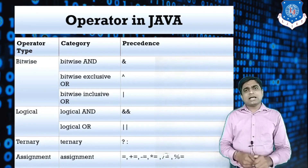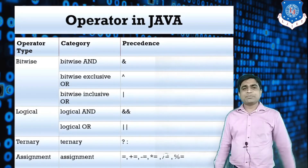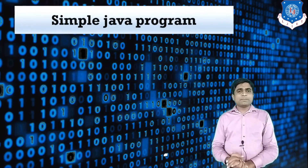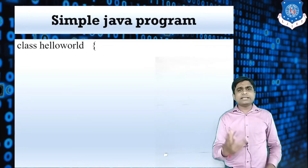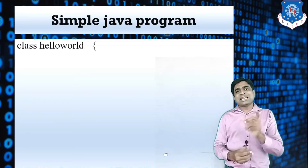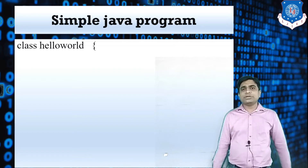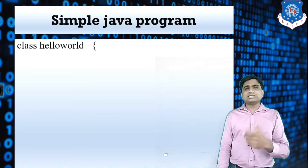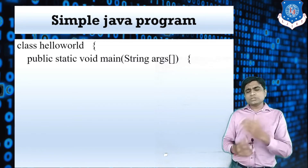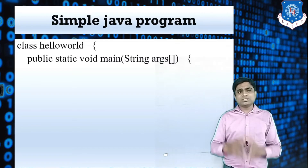These operators will be explained in detail with examples in the programming section. Now our next topic is how to run a simple Java program. The first thing we require is a class. As I explained in my last video on object-oriented programming, a class is a collection of variables and methods. Suppose you want to print 'Hello' in a command prompt — for that you need to use a class.